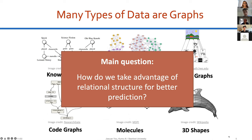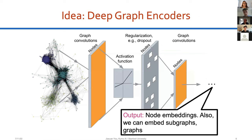The main question we want to answer is: how do we take advantage of this relational structure to make better predictions? Our idea is to use deep graph encoders to encode this relational structure. Concretely, we take the graph structure as input, pass it through a few graph convolutional layers with activation functions and advanced layers like batch norm, and the output is primarily node embeddings. We can also embed subgraphs or entire graphs, but node embeddings are the most commonly used concept in any deep graph encoder.